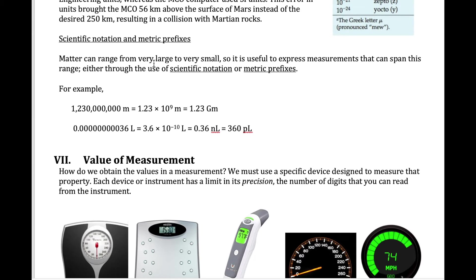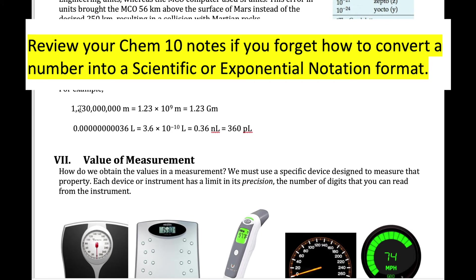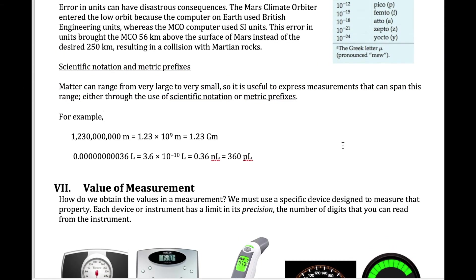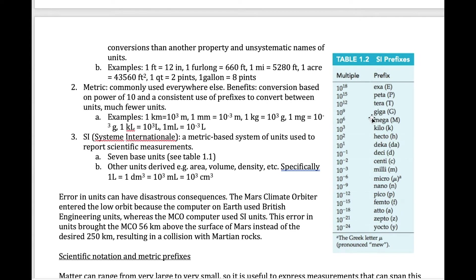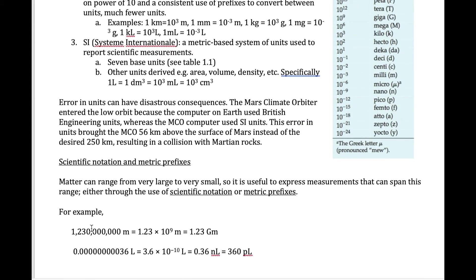Matter studied in chemistry can be very tiny, like the size of atoms, or very large, like the size of stars. It's useful to simplify the writing of really small and really large numbers. We do this two ways: using scientific notation and using metric prefixes. For example, a number like 1,230,000,000 meters is inconvenient to write out, so we can express it in scientific notation or find the closest metric prefix — since it's 10 to the 9th, the prefix giga applies, giving us 1.23 gigameters.